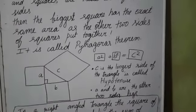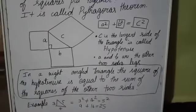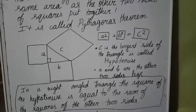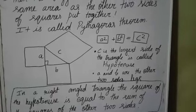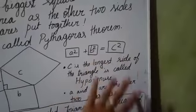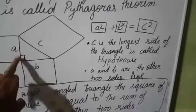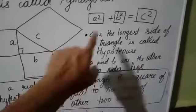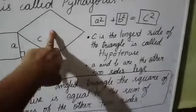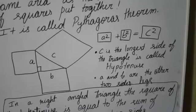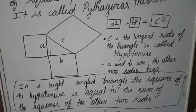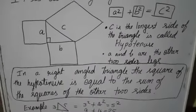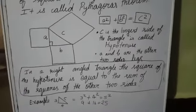Dear students, this is a very important theorem. It is very much useful in your day-to-day life. We can find the unknown side using this theorem. Only the concept is A squared plus B squared equals C squared. The Pythagoras theorem says that in a right angle triangle, the square of the hypotenuse is equal to the sum of the squares of the other two sides. Hope you understood Pythagoras property. Thank you.